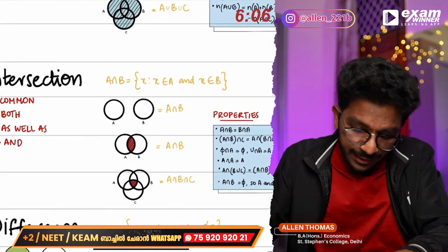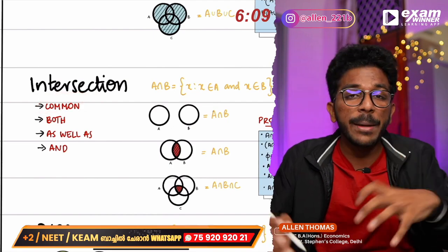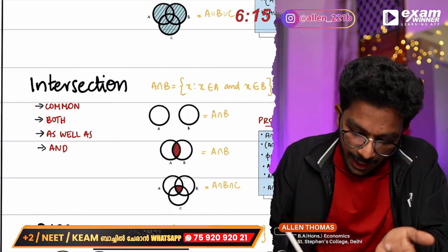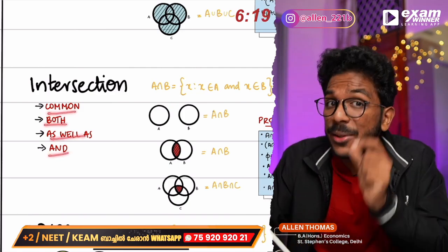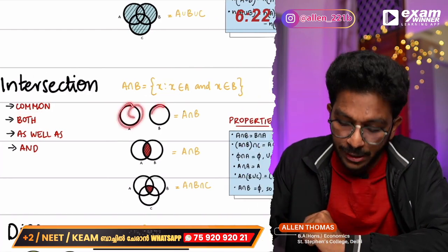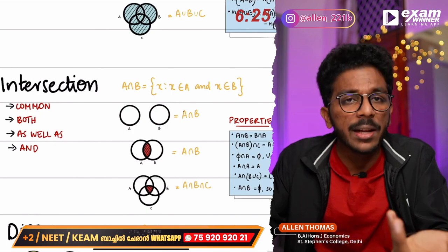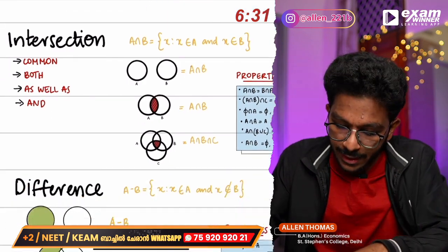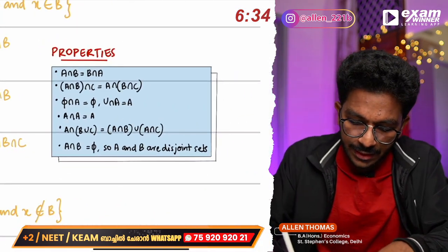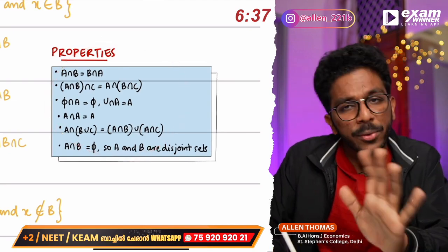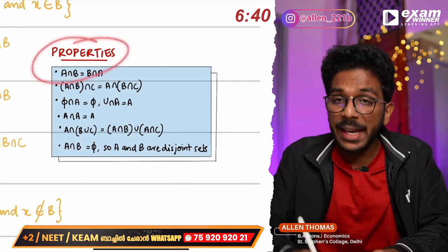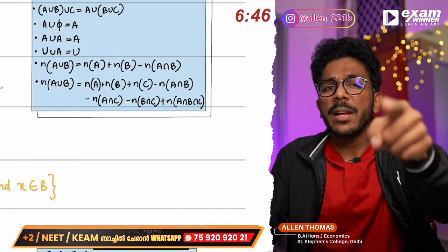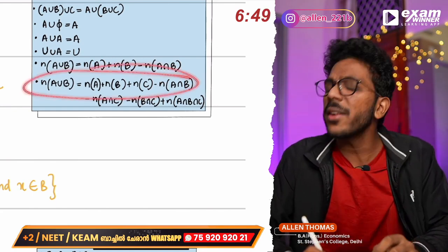Now we have intersection. Intersection means common. If I say A and B as a union, intersect means the common item. Do you have a common item in both sets? A intersection B is the common item. The formula for intersection is very important.